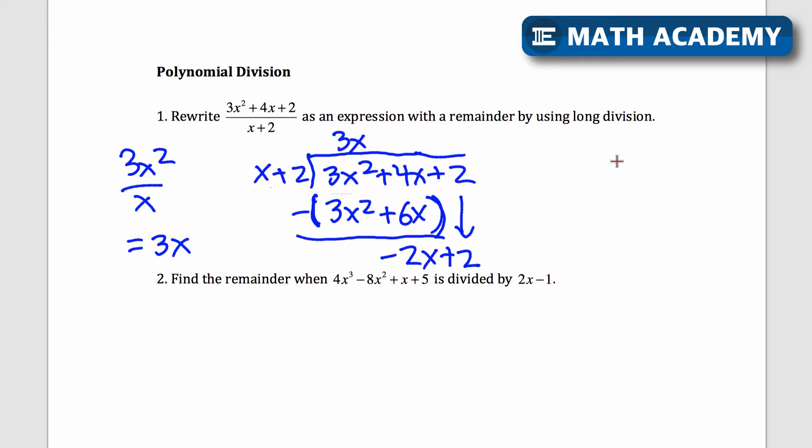How many times does x go into negative 2x? That's a division like that. These cancel out, that'd be negative 2 times. So I'll write negative 2 up here. Once I have a number here, I'm going to multiply it by this again. So negative 2 times x is negative 2x. Negative 2 times 2 is negative 4.